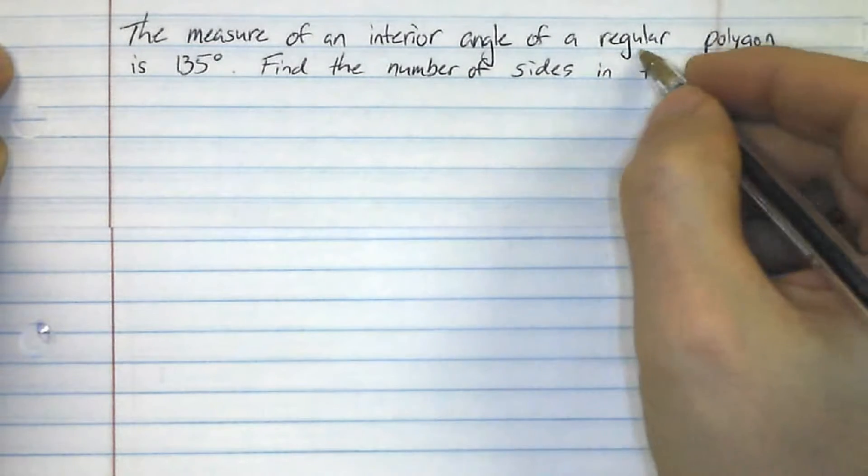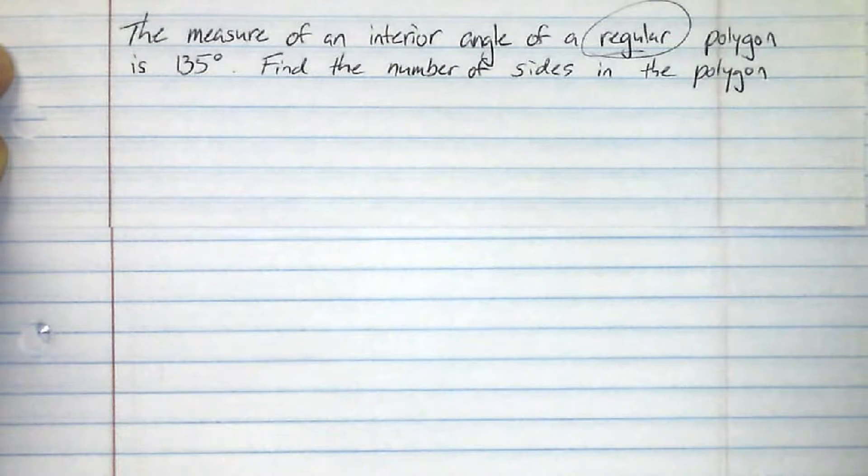Now, this is only possible because it says it's a regular polygon. Remember, regular polygons, when they are regular, the measurements are the same. All those angles are the same.